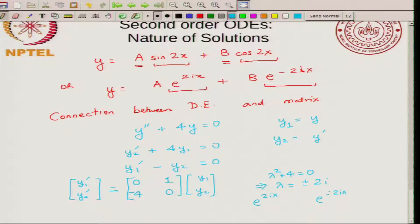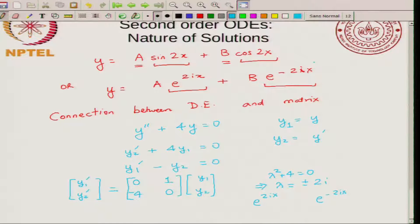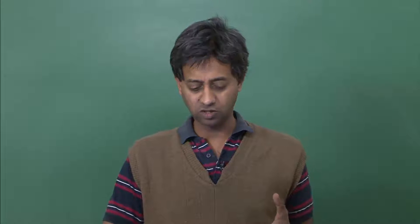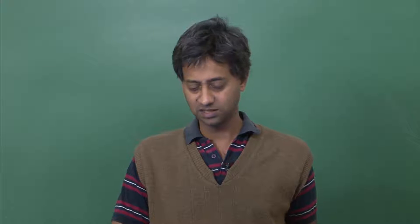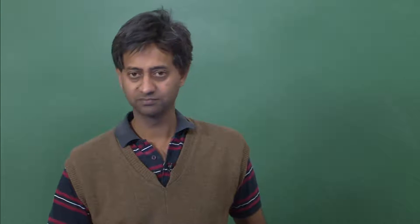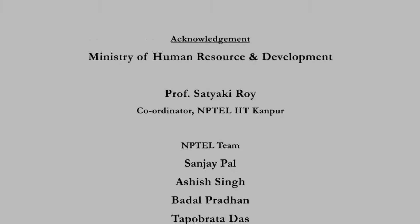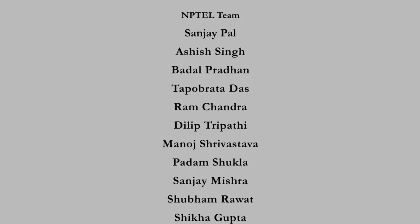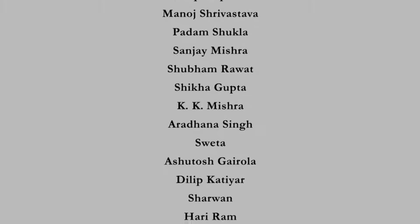This illustrates that because this was a linear homogeneous second order differential equation with constant coefficients, you could use the matrix methods learned from first order differential equations to solve it. The solution a·e^(2ix) + b·e^(-2ix) matches what we had earlier. In the next class we will talk more about homogeneous second order differential equations. Thank you.